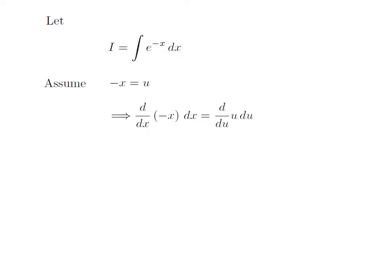we get differentiation of minus x with respect to x, into differential of x, is equal to differentiation of u with respect to u, into differential of u. As we know, differentiation of minus x with respect to x is equal to minus 1, and differentiation of u with respect to u is equal to 1. So we are left with minus differential of x is equal to differential of u.